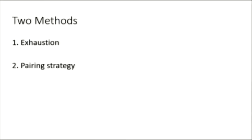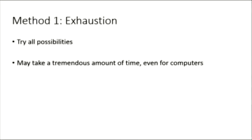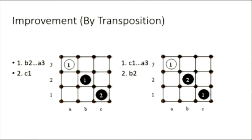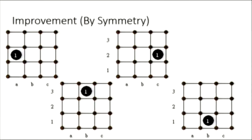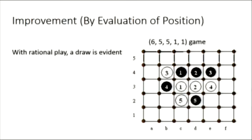We've employed two methods in total for investigating the generalized tic-tac-toe: exhaustion and the pairing strategy. Exhaustion is simple. We just try all possibilities of the moves. Although it must work for all cases, it may take a tremendous amount of time, even for computers, to complete the analysis. We can improve the exhaustion by transposition, by symmetry, or by evaluation of position.